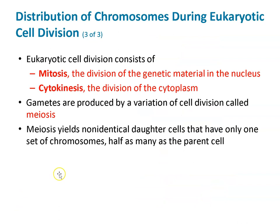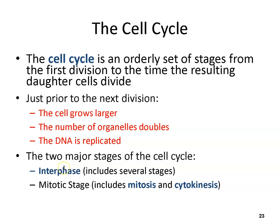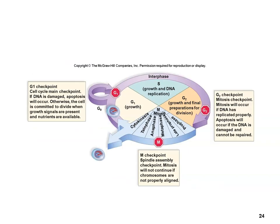Eukaryotic cell division consists of the cell cycle. Cell division specifically consists of mitosis — nuclear division — and cytokinesis, which is the division of the cytoplasm. Gametes are produced by meiosis, which we'll talk about next chapter. The cell cycle is an orderly set of stages: just prior to the next division, the cell grows larger, organelles replicate, and DNA is replicated. The two major stages are interphase, which includes several different stages, and mitosis and cytokinesis.